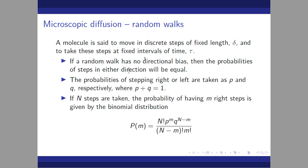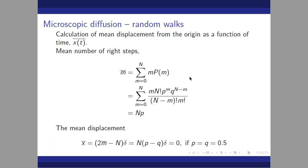If a random walk has no directional bias, then the probability of stepping in either direction will be equal — the molecule doesn't care whether it goes left or right, there is no influence. The probabilities of stepping right or left are taken as P and Q, where P plus Q equals 1. If N steps are taken, the probability of having M right steps is given by the binomial distribution: P(M) = N! / [(N−M)! M!] × P^M × Q^(N−M).